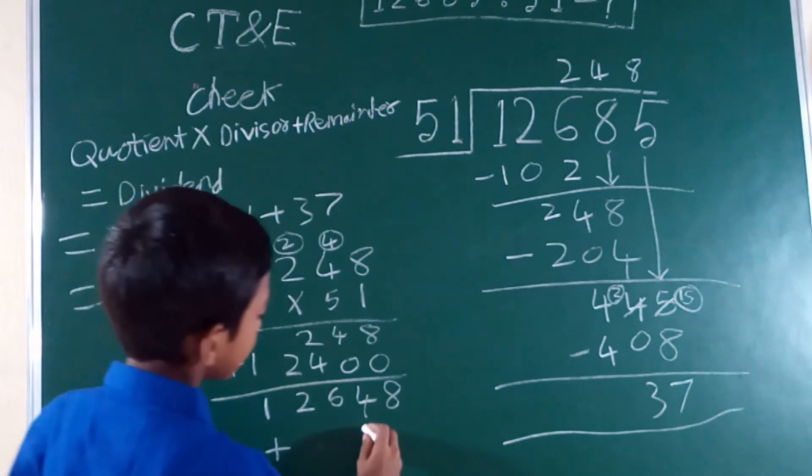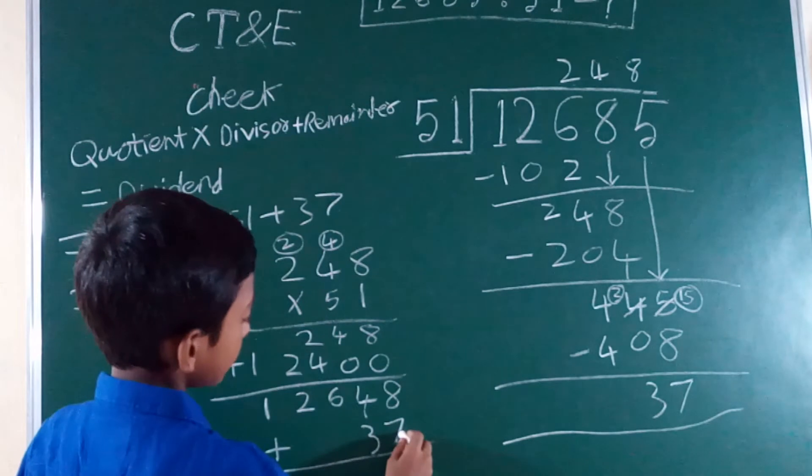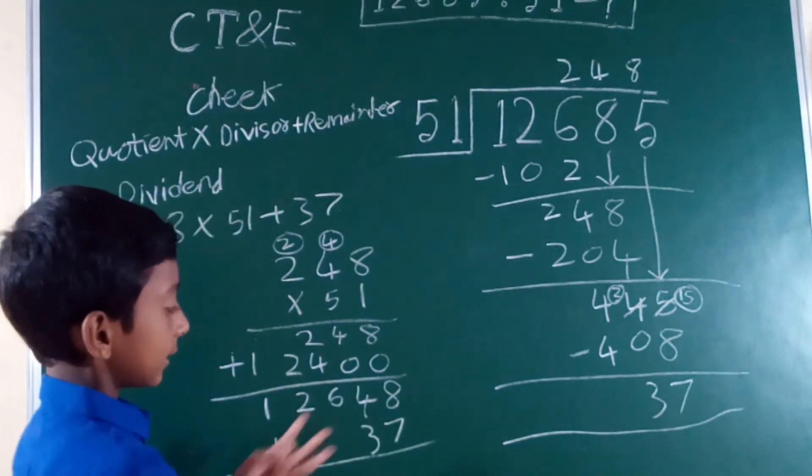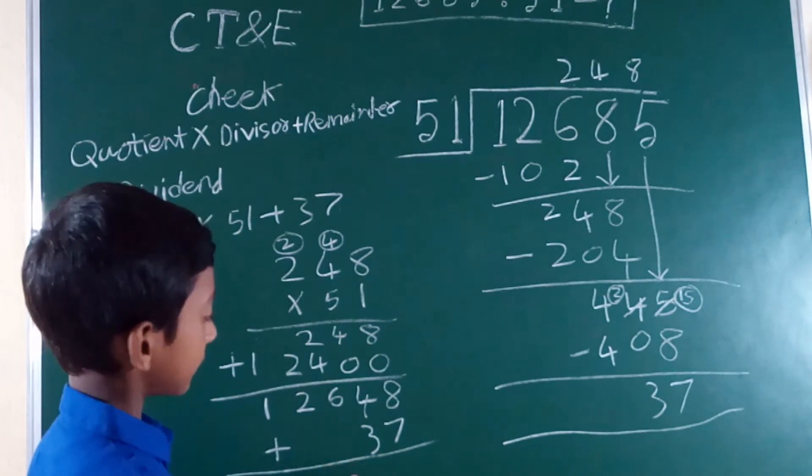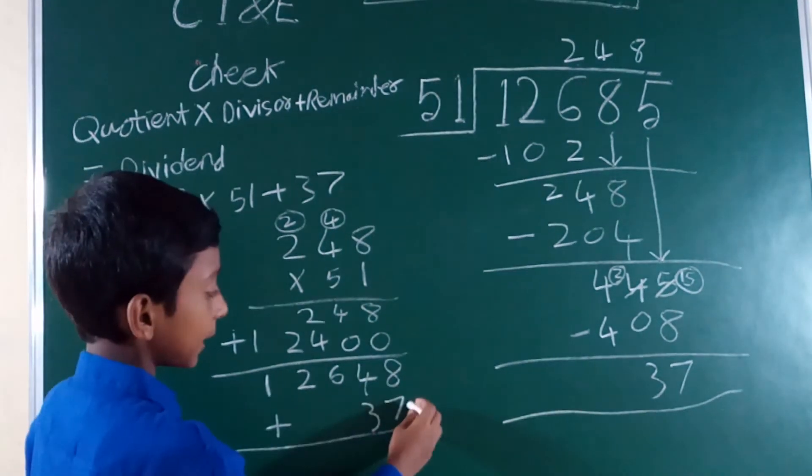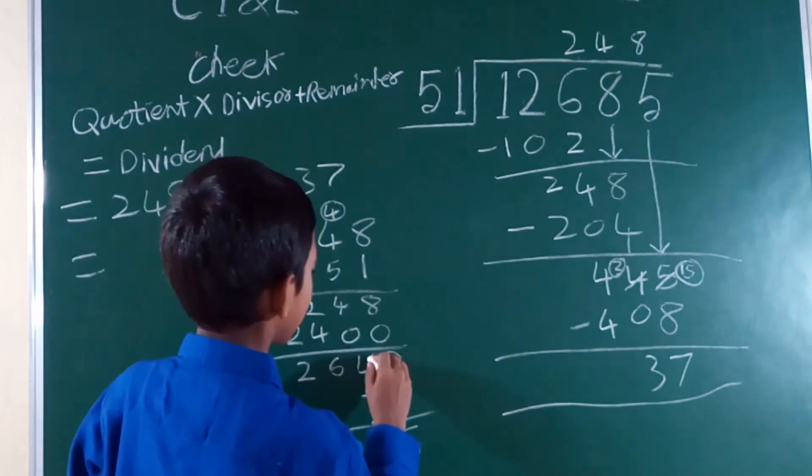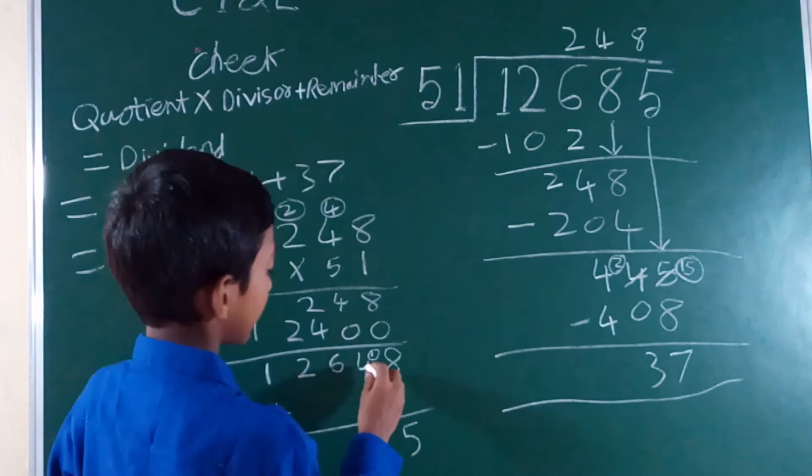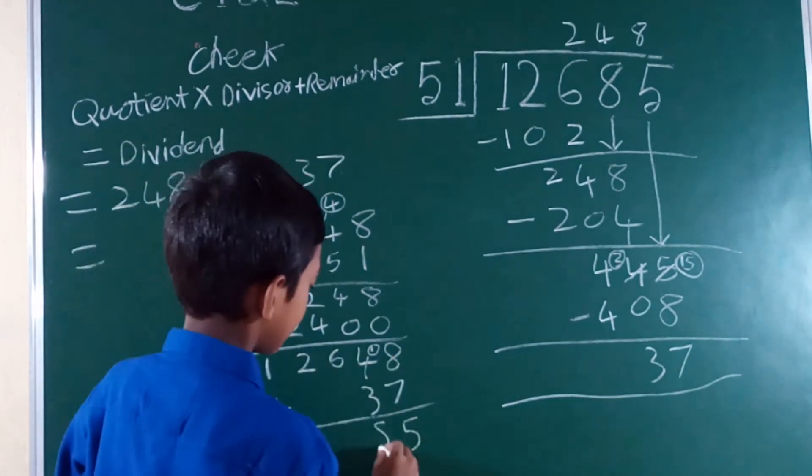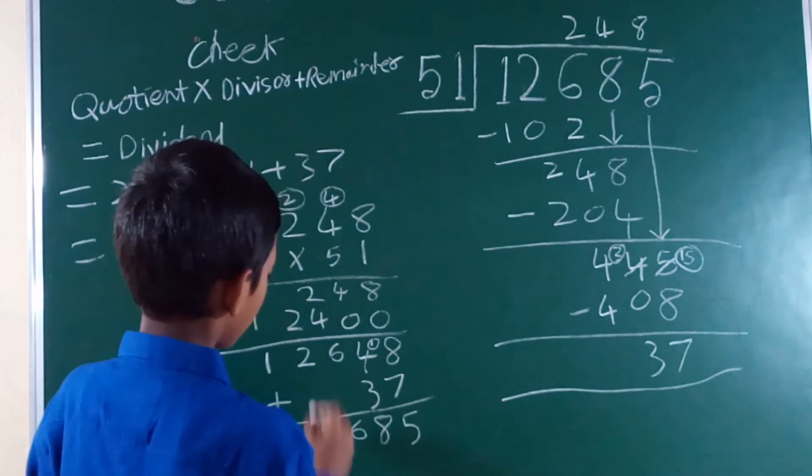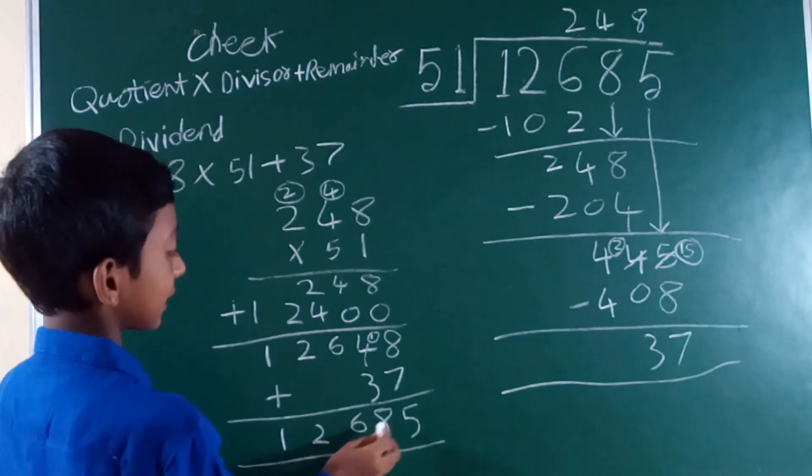Then 8 plus 0 is 8, 4 plus 0 is 4, 2 plus 4 is 6, and 2 will carry to hundreds. Then 8 plus 37. 8 plus 7 is 15, so we keep 5 here and 1 will carry to tens place. 4 plus 3 is 7 plus 1 is 8. Here 8, 6 will come here, 2 here, 1 here. That's 12,685.